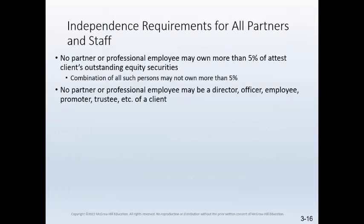All CPA firm partners and professional employees are under a number of restrictions relating to attest clients. Two primary requirements relate to overall investments in those clients and to employment status. First, no partner or professional employee of the CPA firm or immediate family may own more than 5% of an attest client's outstanding equity securities during the period of professional engagement. Also, no group acting together can own more than 5%, or firm independence is impaired. No partner or professional employee of the CPA firm may be a director, officer, employee, promoter, trustee, etc. of a client. If a CPA was previously employed by the client, they must disassociate themselves from that client and not participate in audits of any periods during which they were employed by the client.